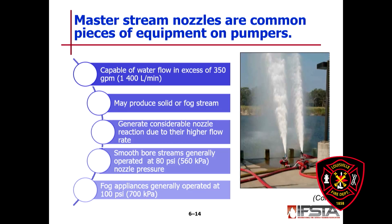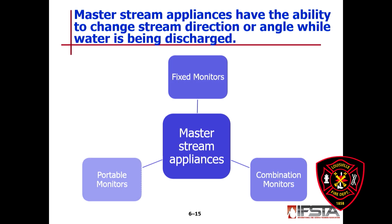Smooth bore streams on master appliances generally operate at 80 PSI nozzle pressure, and fog streams generally operate at 100 PSI. Master stream appliances have the ability to change stream direction or angle while water is being discharged. With our monitors and blitz fires, we are now able to move that nozzle while flowing at high gallonage.